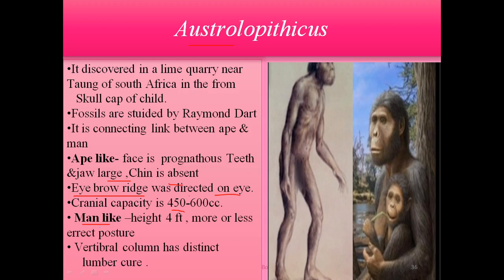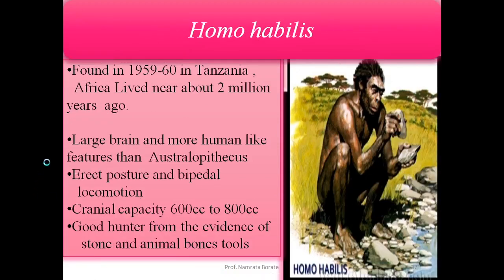Australopithecus also shows man-like characteristics: height was near about four feet, more or less erect posture, and the vertebral column has a distinct lumbar curve.